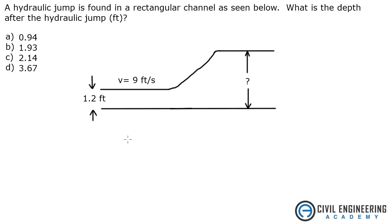It says a hydraulic jump is found in a rectangular channel as seen below. What is the depth after the hydraulic jump? We're given an upstream depth of 1.2 feet, a velocity of 9 feet per second. We've got a hydraulic jump here, the water is changing elevations, and we're trying to find the depth after the jump. I'm going to go straight to the Civil Engineering Reference Manual — chapter 19 covers hydraulic jumps and lists a couple of equations.